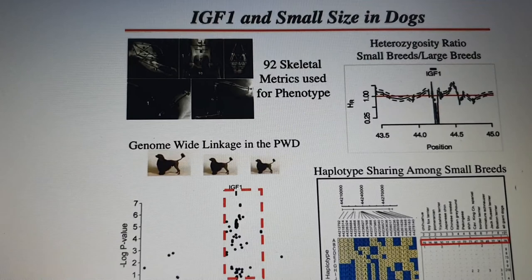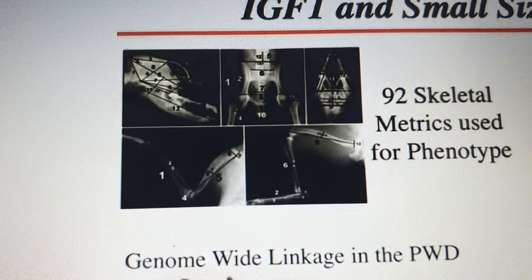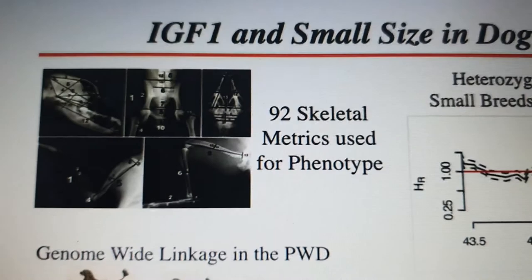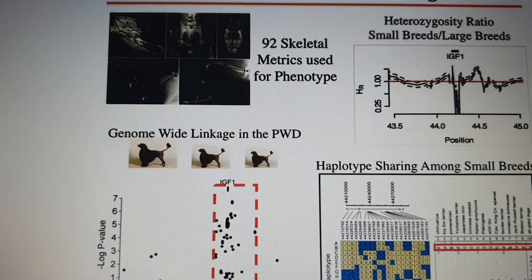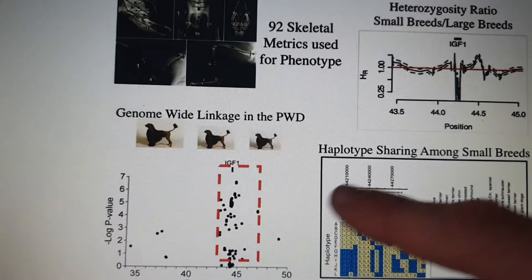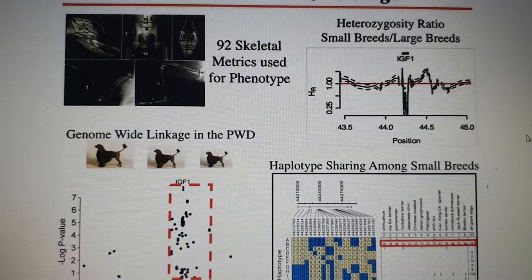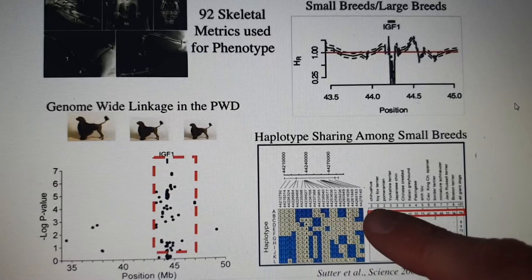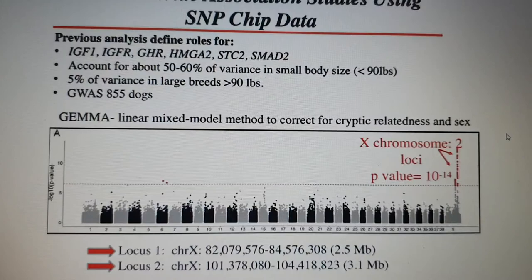Researchers performed X-ray imaging on dogs and looked at all types of skeletal metrics. In Portuguese Water Dogs they found strong clustering. More broadly, they found a clear switch between small and large breeds, with a specific haplotype shared among small breeds that is present in all small breeds — which will be demonstrated further.